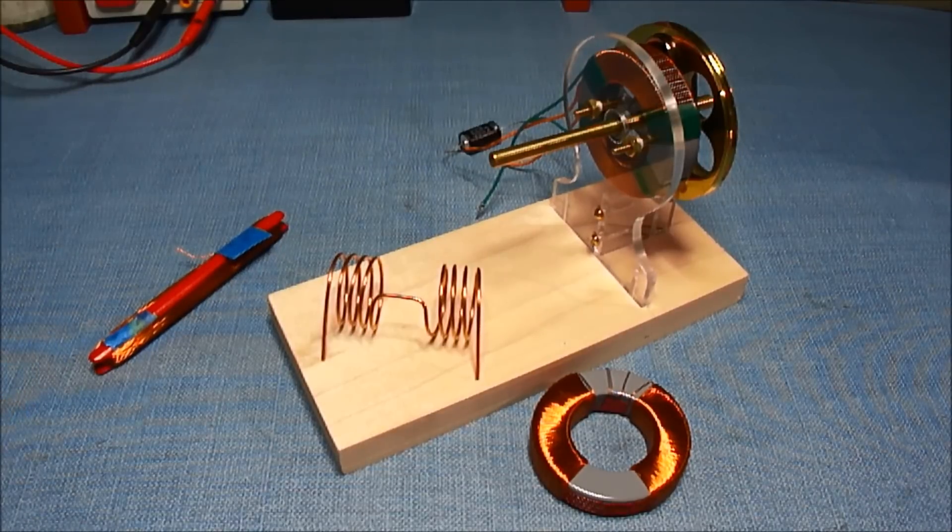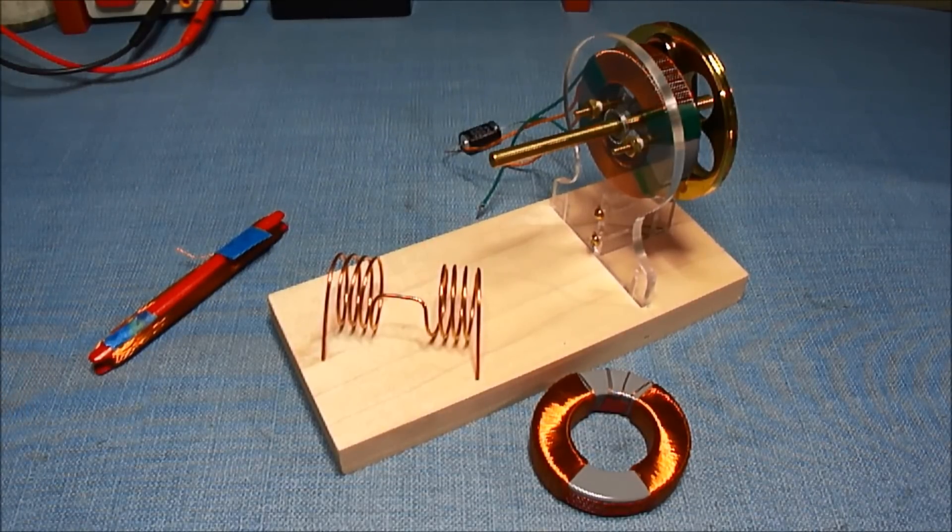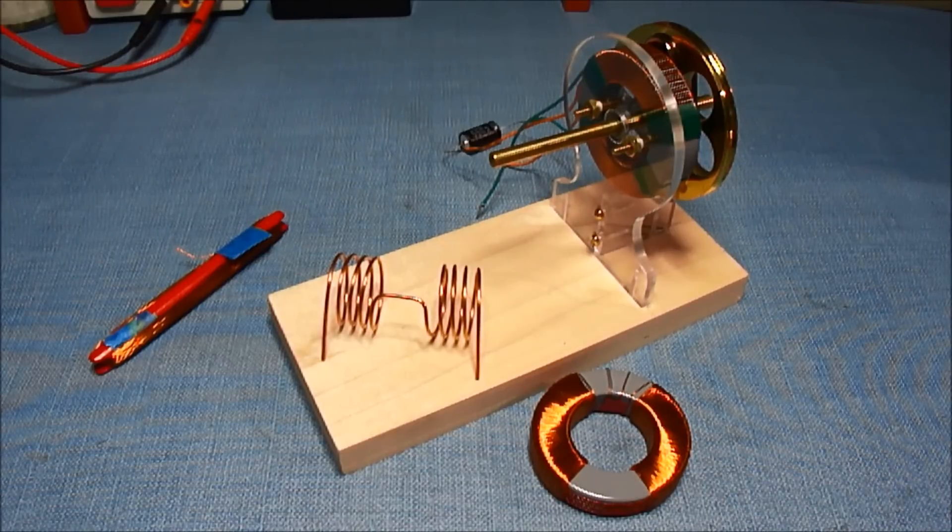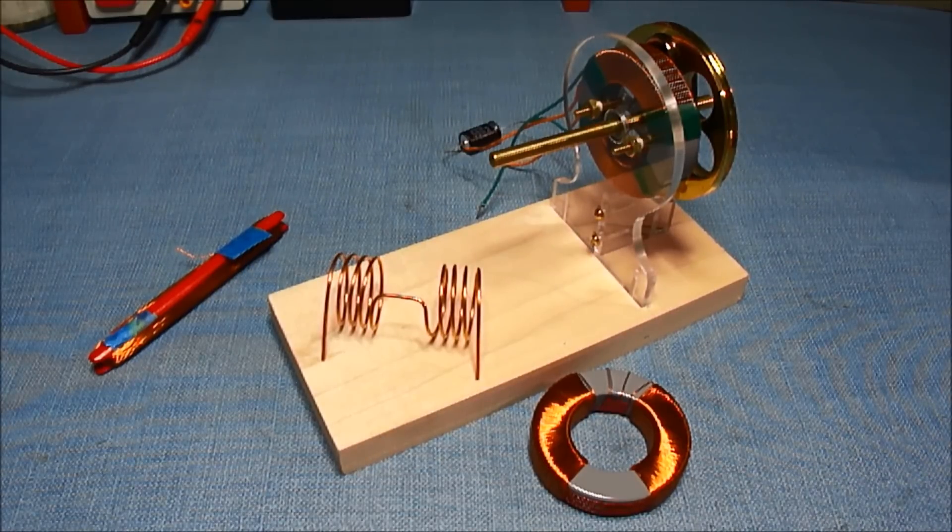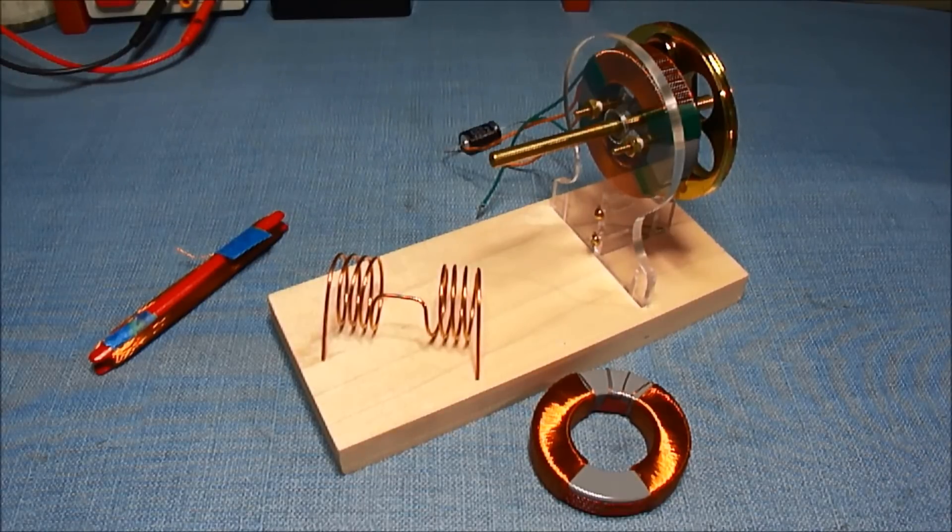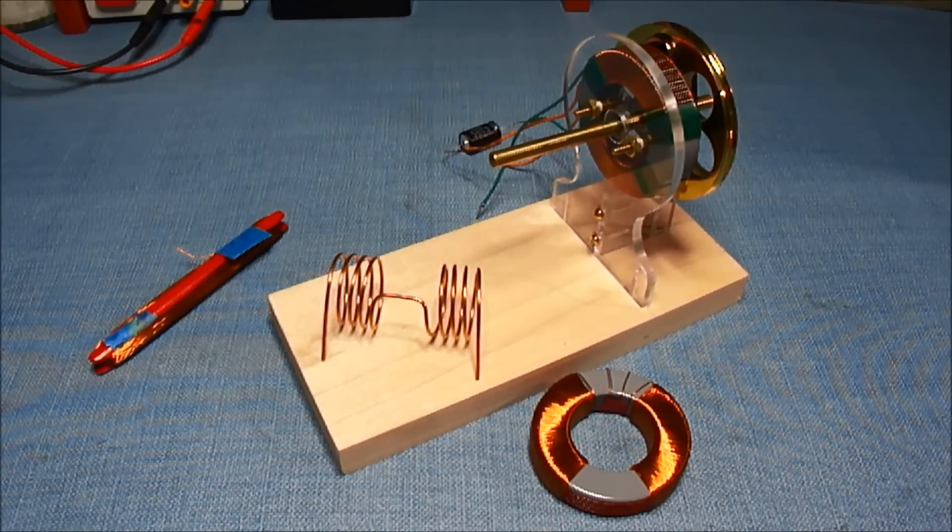The coil that's on the generator now is only a single layer. It's a bi-filer coil and there's a total of 260 turns between the two halves. I tested that before and it only puts out millivolts and milliamps. But connected to a transformer I'm able to light an LED with it.